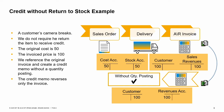In this case, a customer's camera breaks. Unlike our last example, we do not require the customer to return the item to receive credit. As before, the original cost is 50 and the invoiced price is 100. We once again reference the original invoice and create an item type credit memo. However, this time we select the checkbox without quantity posting. The customer receives full credit for the item and no stock postings are made.